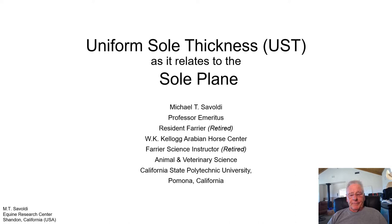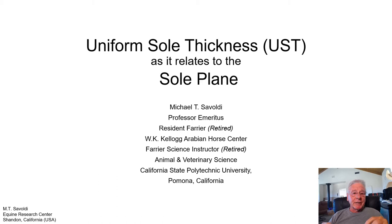Hello everyone, my name is Michael Savoldi. A short while ago I placed a video on YouTube talking about uniform sole thickness (UST) as it relates to the sole plane. These are two terms rarely used in the farrier industry, but they have a lot of meaning. Once they're well understood, they can be very beneficial to understanding what it is we're trying to achieve when shoeing a horse's foot. The sole plane can be very distortable — it can twist and bend — which will also cause the capsule to distort. One of the keys to a distortion-free capsule is to understand the twist and bends in the sole plane.